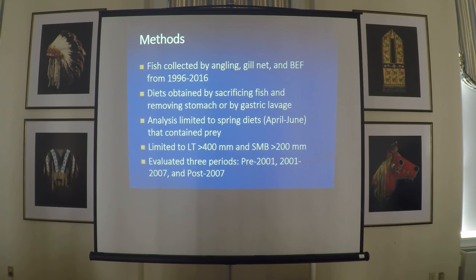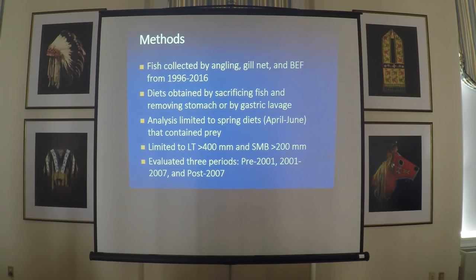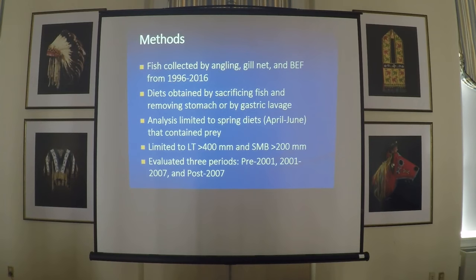We have data from 1996 through 2017, but we're only presenting through 2016 because we haven't identified the diets from last year. Diets were obtained by either sacrificing fish and removing the entire stomach, or by gastric lavage. We're limiting the discussion to diets collected in the spring, April through June, and also limiting it to adult fish — lake trout greater than 400 millimeters and smallmouth bass greater than 200 millimeters.